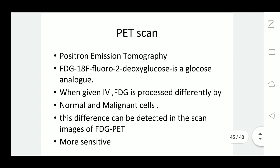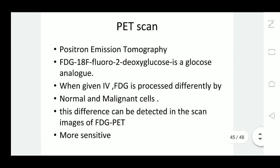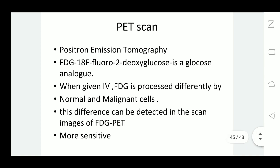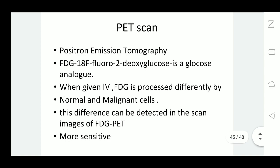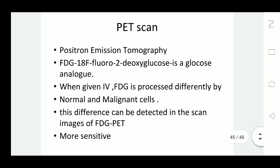The next technique is positron emission tomography (PET). It uses FDG, or 18-F fluoro-2-deoxy-glucose, a glucose analog, which is given intravenously. FDG is processed differently by normal and malignant cells, and this difference is detected by PET to determine whether tissue is malignant or normal. This FDG PET scan is useful for identifying normal versus malignant lymph node enlargement.